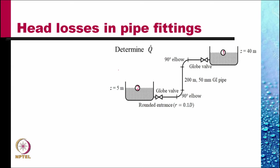Let us do an example. The diagram shows a piping system in which a 200 meter, 50 millimeter galvanized iron pipe is connecting two reservoirs. One reservoir at an altitude of 40 meters and the other reservoir in which the level is at 5 meters altitude.